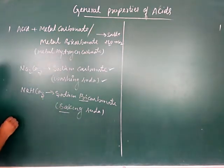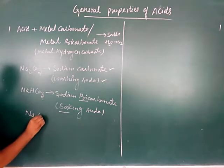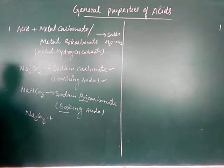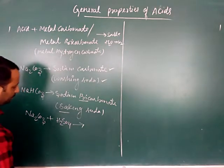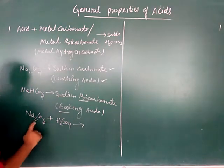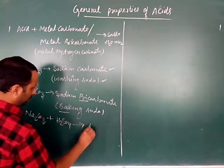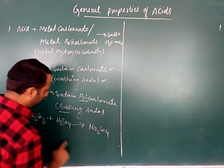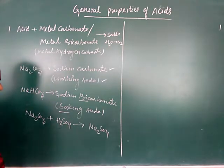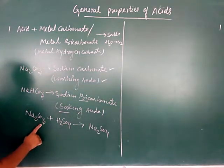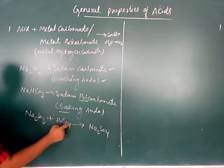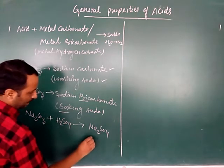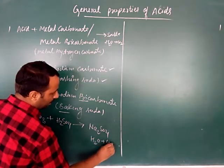Let's take sodium carbonate Na₂CO₃ and react it with dilute sulfuric acid H₂SO₄. What will form? Sodium sulfate Na₂SO₄ — the SO₄²⁻ and Na⁺ ions combine — along with water plus carbon dioxide.